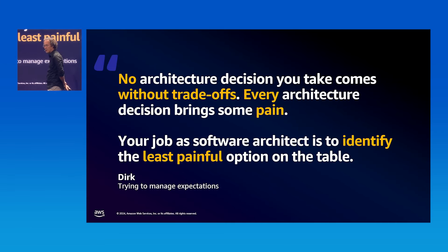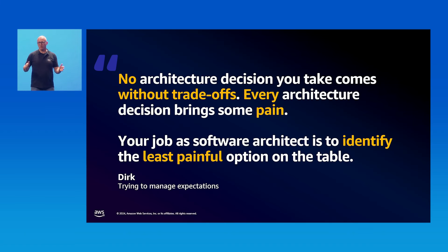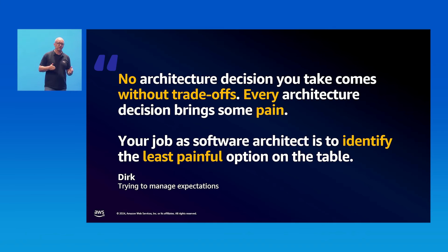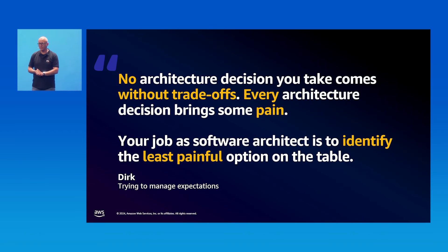We want just a solution that solves all our problems, but the ugly truth is there's no silver bullet in software architecture or in any other question of life. We always need to be aware of the so-called false healer — an approach or technology told to solve all our problems — but in fact every architecture decision comes with some pain. As a software architect, you need to assess the options on the table and be aware of all their trade-offs.